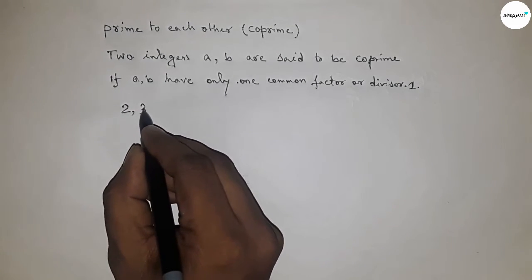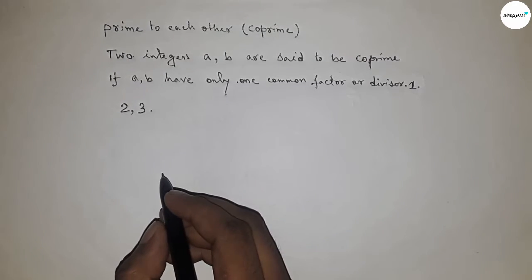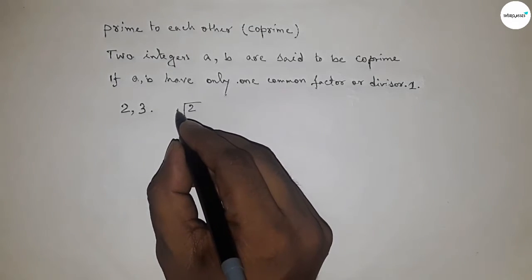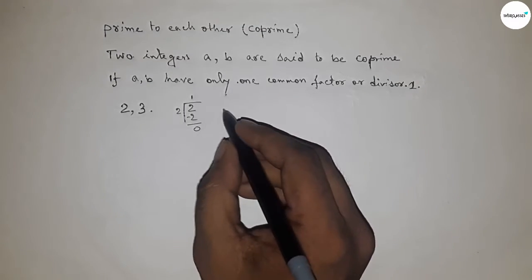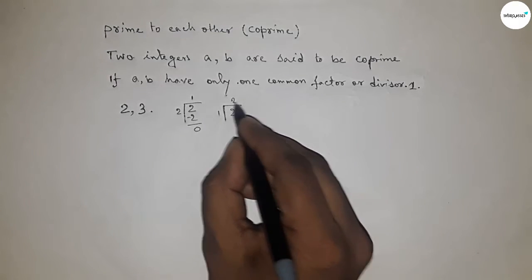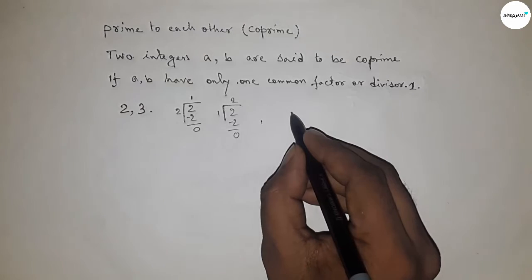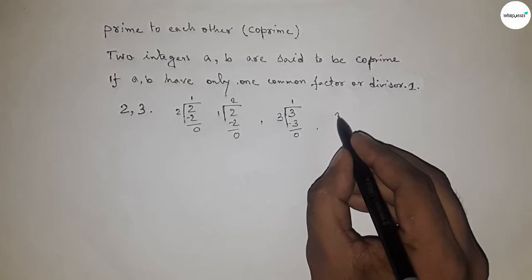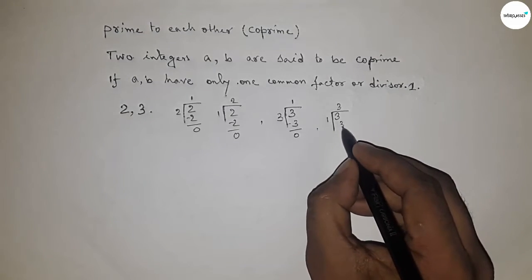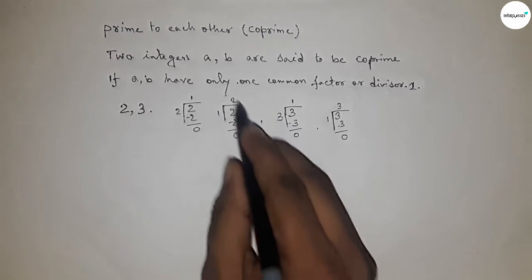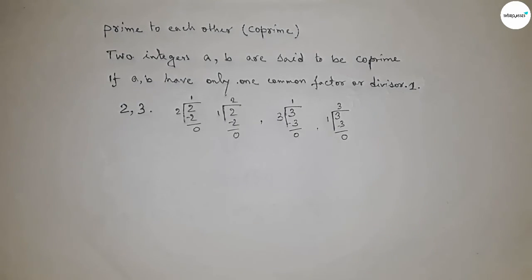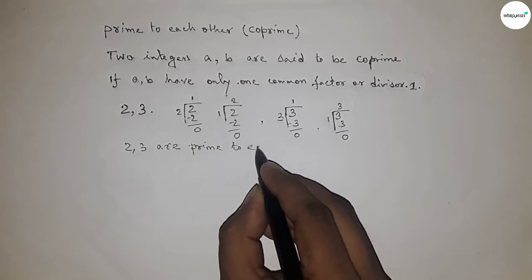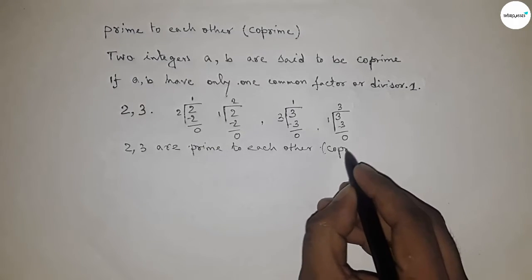Let's check with an example: take 2 and 3. Two can be divided by 2 and by 1. Three can be divided by 3 and by 1. Both share only one common divisor, which is 1. So 2 and 3 are co-prime integers.